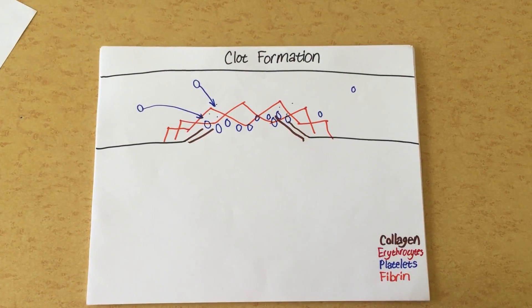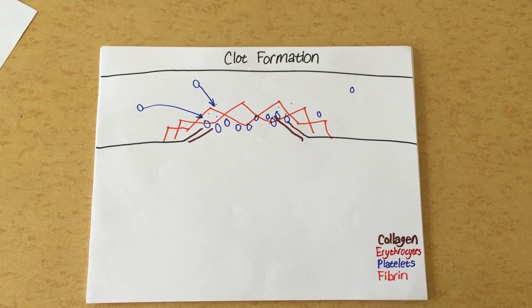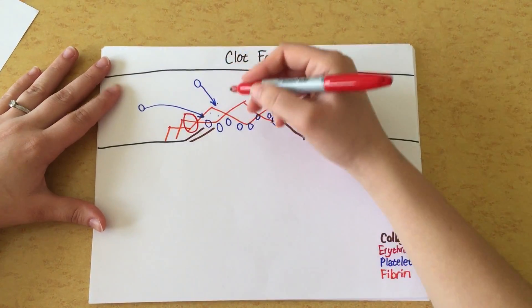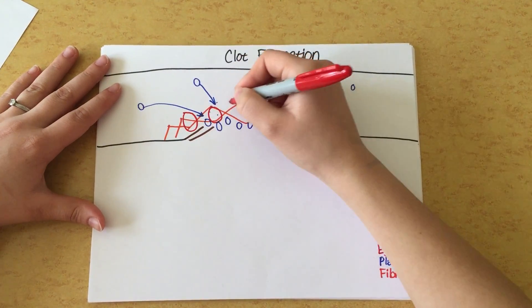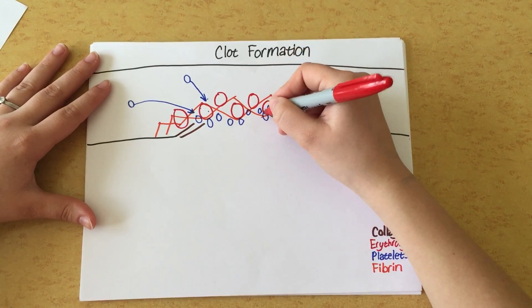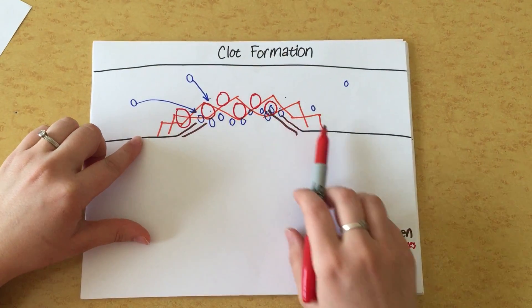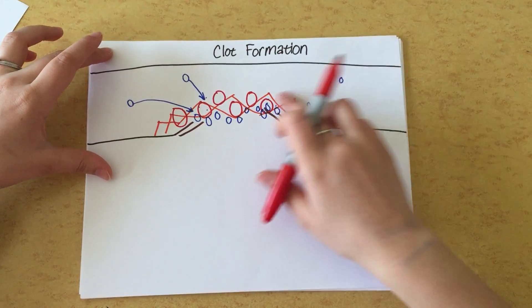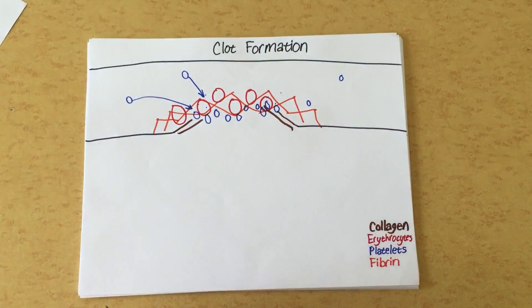Now fibrin forms this net, and this net will trap some erythrocytes or some of those red blood cells. So it traps these red blood cells, and together these form the blood clot that will stop you from bleeding, from blood leaking out of this broken blood vessel, and will allow it to heal.